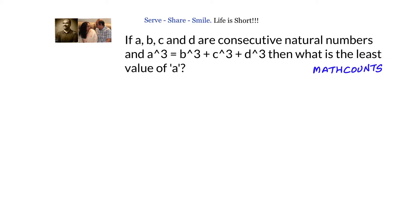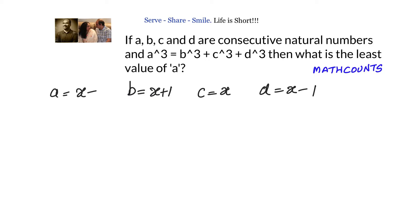To solve this problem, let us start with a variable x. Let c = x, d = x minus 1, b = x plus 1, and a = x plus 2. We can see that a, b, c, d are now consecutive natural numbers, with a difference of 1 between them.